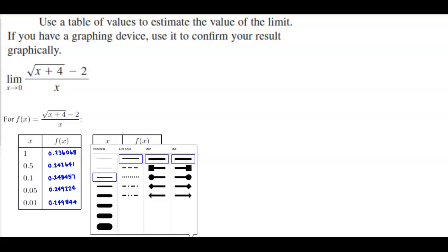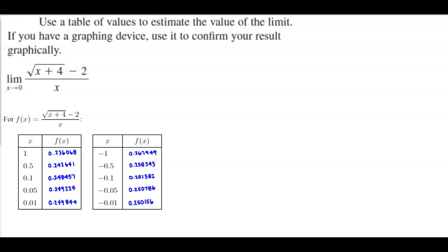We're first going to find out what's happening as we approach the limit as X is approaching 0 of the square root of X plus 4 minus 2 over X. The first thing I want to do is find out what happens when the limit is approaching 0 from the left of our function: the square root of X plus 4 minus 2 over X.